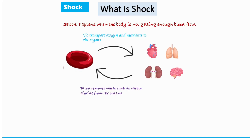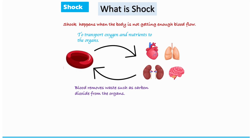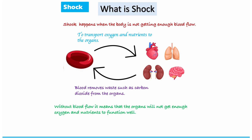The primary function of blood is to transport oxygen and nutrients to the various organs of the body. When there is no blood flow to these organs, it means they will not get enough oxygen and nutrients to function well. Lack of oxygen and nutrients can damage many organs, and this is where shock comes in.